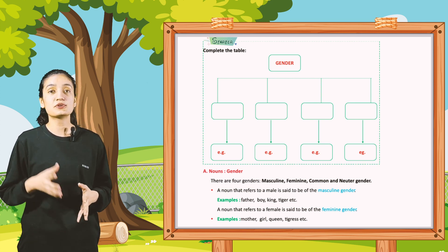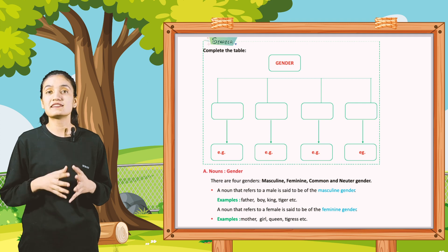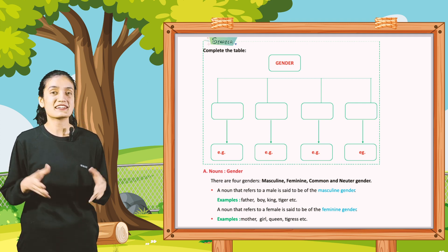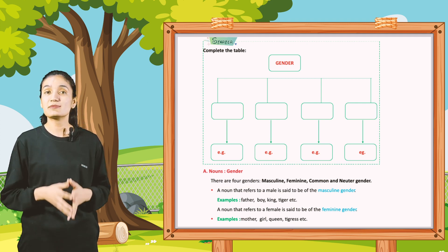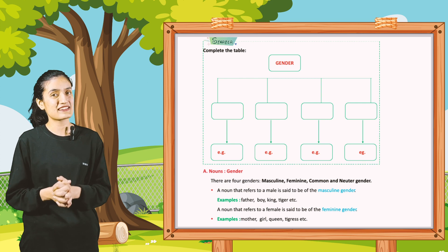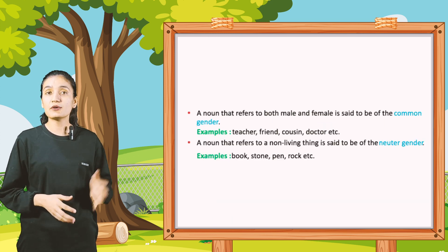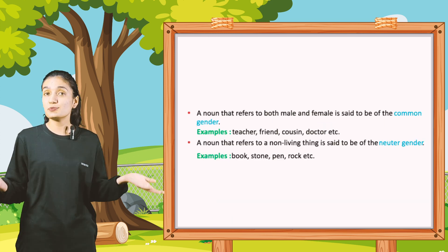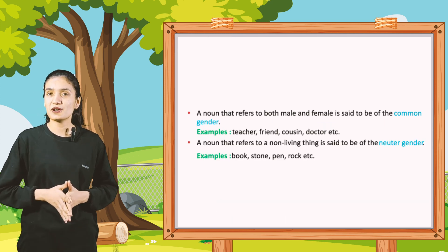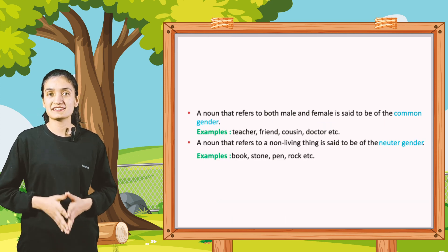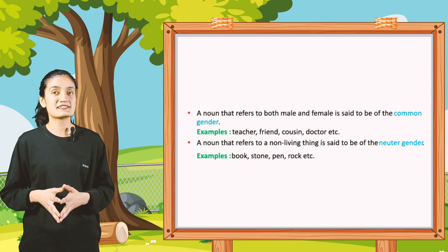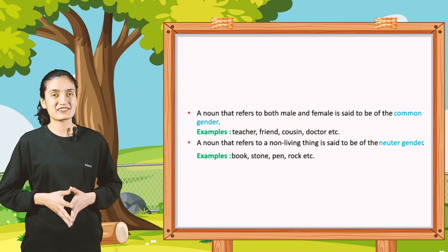A noun that refers to a female is said to be of feminine gender. Examples: mother, girl, queen, tigress, etc. A noun that refers to both male and female is said to be of common gender. Examples: teacher, friend, cousin, doctor, etc.